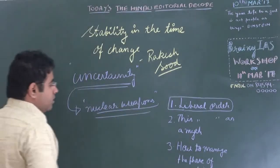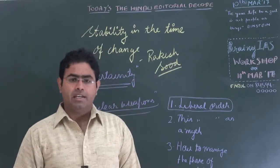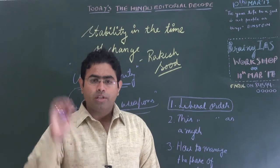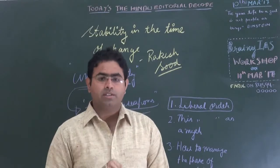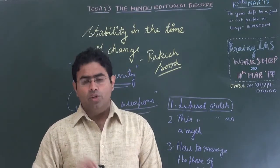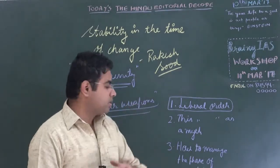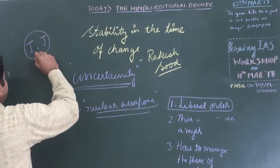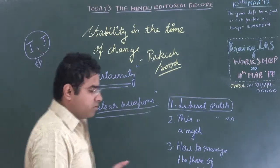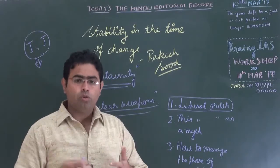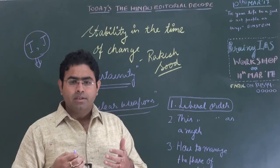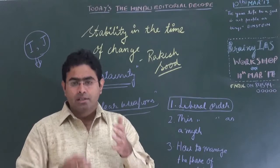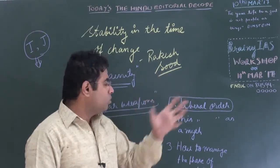According to Rakesh Sudh, this uncertainty is most dangerous in the sphere of nuclear weapons. In the current phase of uncertainty, where we are unsure how the economy and diplomacy will yield results, the biggest threat to humanity comes from nuclear weapons. Rakesh Sudh argues that countries like India and Japan should come together and promote the idea of a nuclear-free world, developing deterrence.